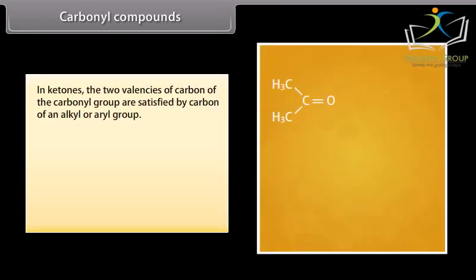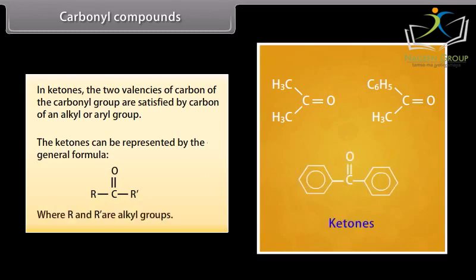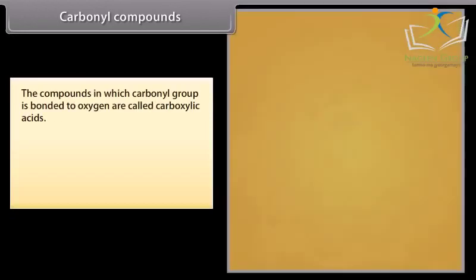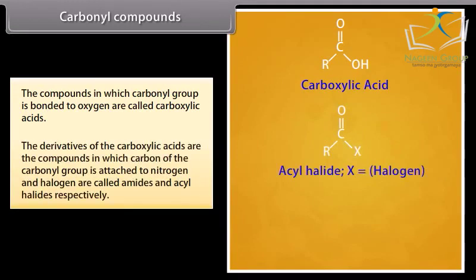In ketones, the two valencies of carbon of the carbonyl group are satisfied by carbon of an alkyl or aryl group. Ketones can be represented by the general formula R-CO-R', where R and R' are alkyl groups. The compounds in which a carbonyl group is bonded to oxygen are called carboxylic acids. The derivatives of carboxylic acids in which carbon of the carbonyl group is attached to nitrogen and halogen are called amides and acyl halides respectively.